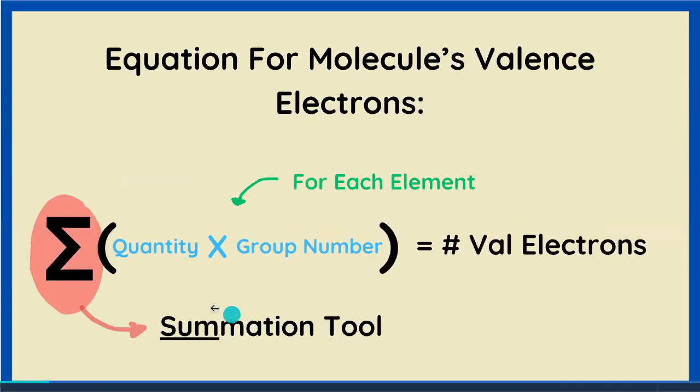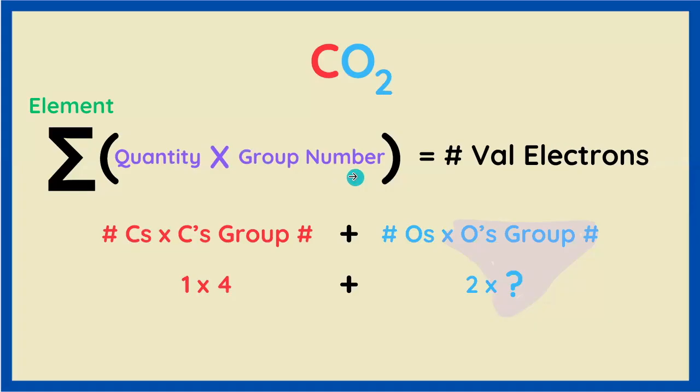That's what the sigma means. It's a summation tool. It adds up all the products of quantity times group number for each individual element. We use the same equation for one of the other molecules we have to rank, so it's pretty straightforward.